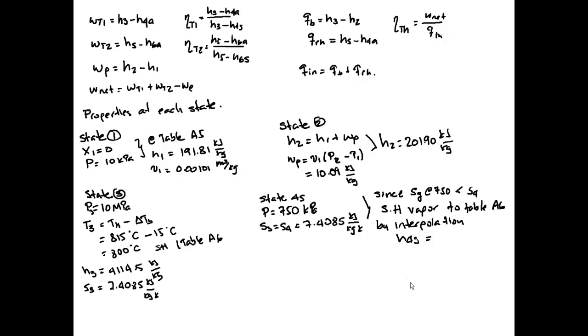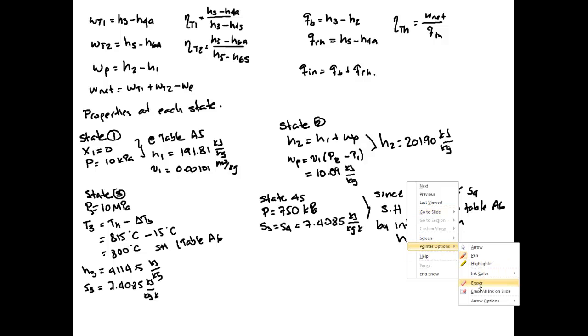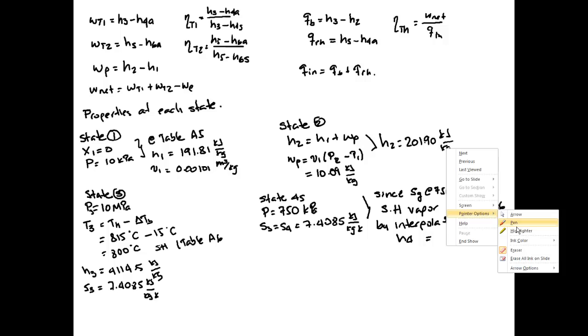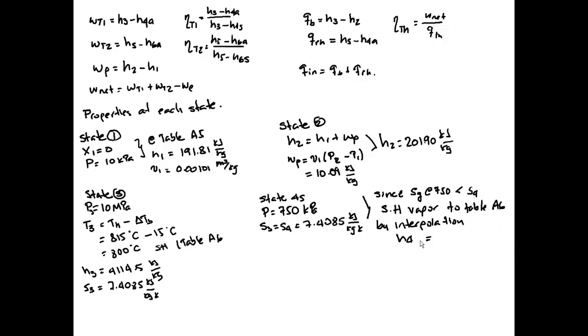Since s_g at 750 is smaller than s4, we know this is superheated vapor. Again, we go to table A6, and by interpolation we find that h4S equals 3050.4 kilojoules per kilogram.